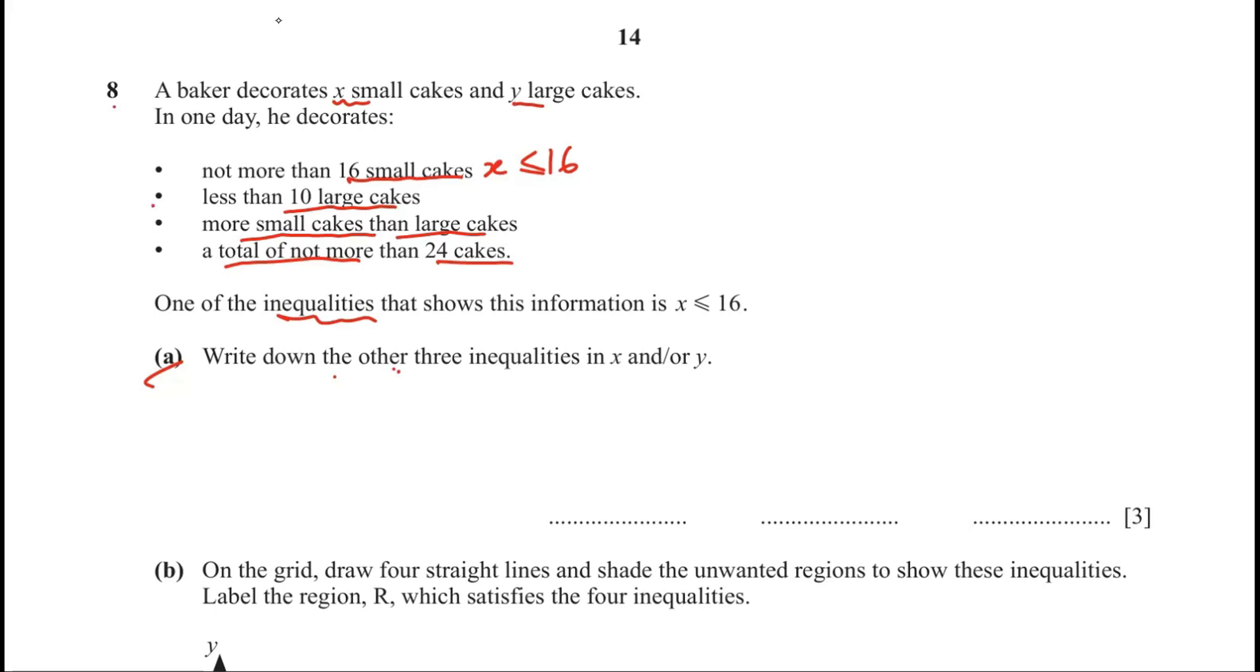Let's look at the second bullet point, less than 10 large cakes. So y is less than 10. The third one, more small cakes than large cakes. So y is less than x. And then the fourth one, a total of not more than 24 cakes. So when I add x plus y should be less than or equal to 24 cakes.